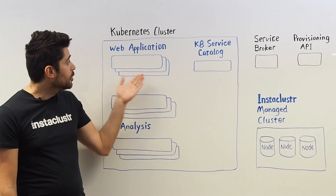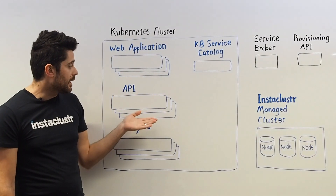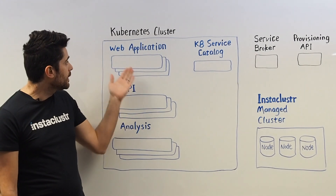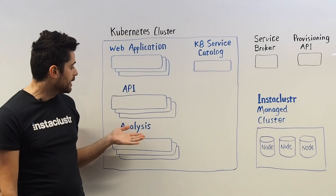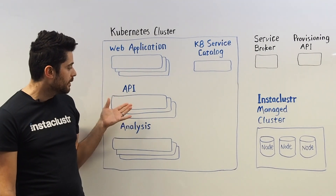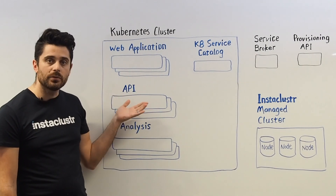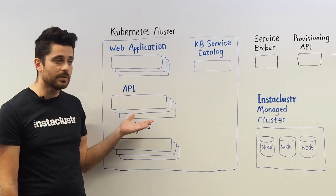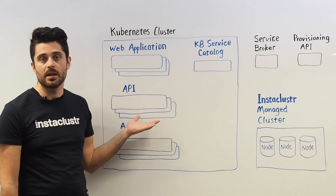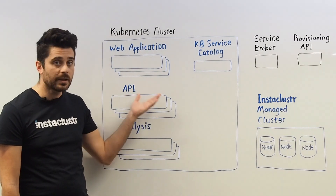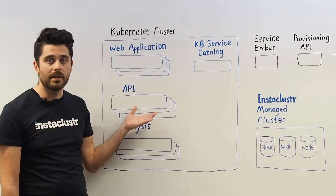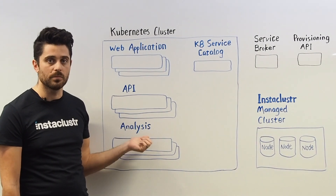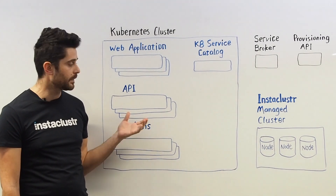Here we have your Kubernetes application running in a Kubernetes cluster. It has a bunch of different applications running in pods. They can be deployed via deployments using auto scaling groups, hidden behind load balancers — all the stuff that we expect from our Kubernetes environment.